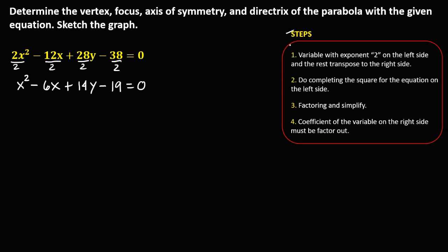Now we can use the steps to solve the problem. First, place the variable with exponent 2 on the left side and transpose the rest to the right side. Since x is the variable with exponent 2, we put x terms on the left: x squared minus 6x equals negative 14y plus 19.